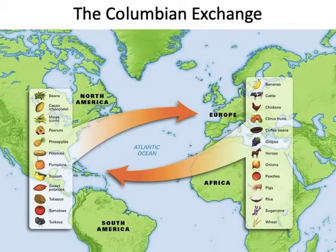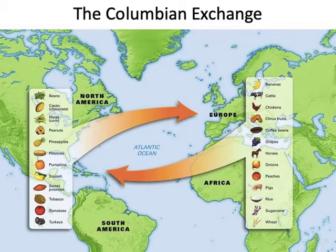The Columbian Exchange was the exchange of a vast array of plants, animals, culture, ethnicities, technology, and diseases between Europeans and the people of the Americas. This exchange had profound consequences and touched the lives of every person on both sides of the Atlantic. Plants that had never been seen in Europe before, like potatoes and tobacco, rapidly became staples in European diets and popular commodities.